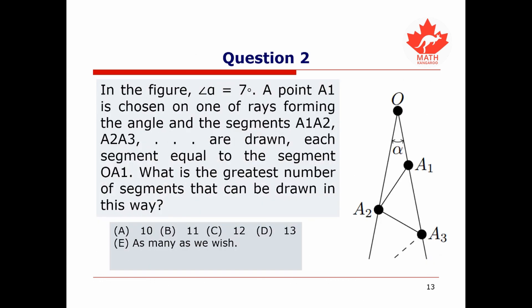The second problem: we have a figure where angle alpha is 7 degrees. A point A1 is chosen on one of the rays forming the angle, and segments A1A2, A2A3, and so on are drawn, each segment equal in length to OA1. What is the greatest number of segments that can be drawn in this way?